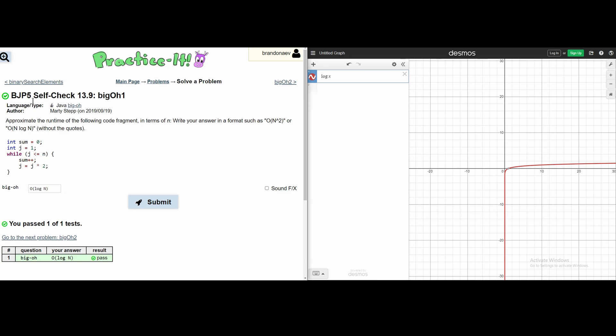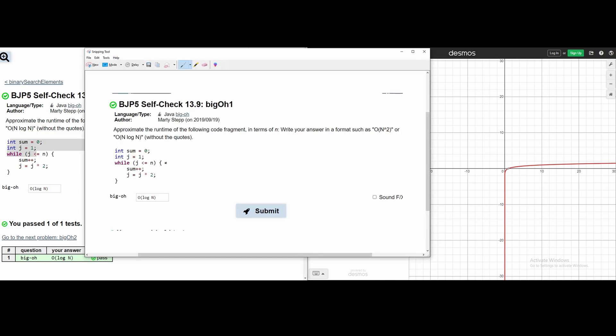We're going to go over a couple of Big O exercises. For this exercise, we're asked to approximate the runtime of the following code fragment in terms of n. If we have our code like this, and let's say our n is 20, we are going to see how many times this runs.